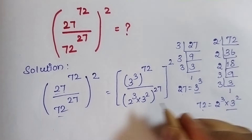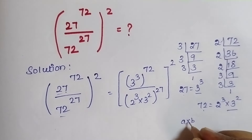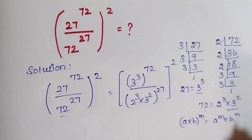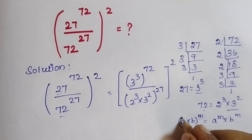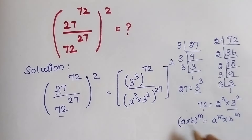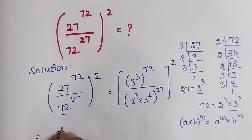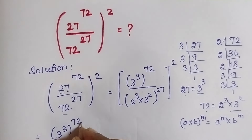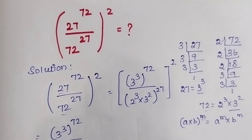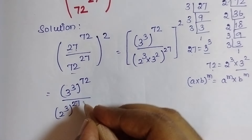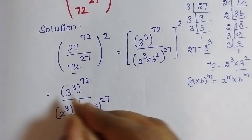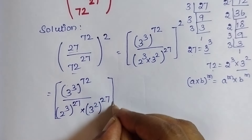If we look here, the denominator is in the format of A times B, the whole power M. This can be written as A power M times B power M — we can write the power separately for each term. Applying this rule, we get: 3 to the power of 3 times 72, divided by 2 cubed to the power of 27, times 3 squared to the power of 27, the whole squared.